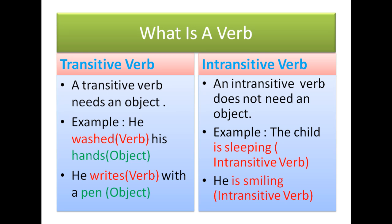Another example: 'He is smiling.' Here, 'is smiling' is the intransitive verb — there is no object, just an action being performed.